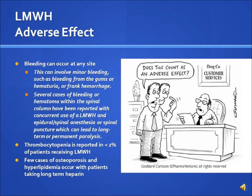The adverse effects of low molecular weight heparin involve bleeding at any site. This can involve minor bleeding such as bleeding from the gums or hematuria, or frank hemorrhage. Several cases of bleeding or hematoma within the spinal column have been reported with concurrent use of a low molecular weight heparin and epidural spinal anesthesia or spinal puncture, which can lead to long-term or permanent paralysis. Thrombocytopenia is reported in less than 2% of patients. Few cases of osteoporosis and hyperlipidemia can occur with long-term heparin use.